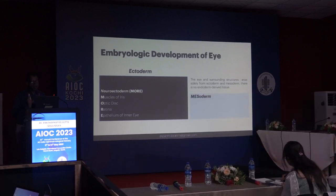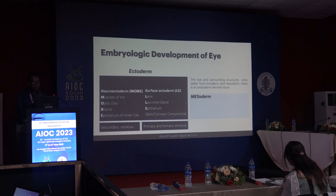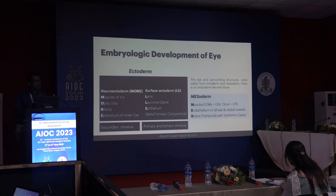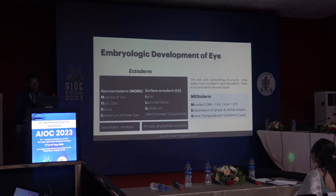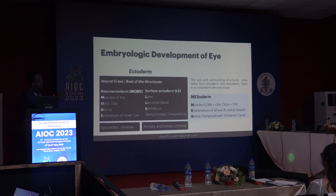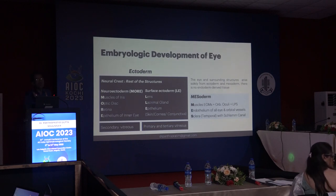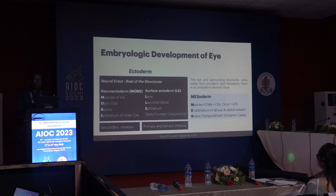The eye and surrounding structures arise solely from ectoderm and mesoderm — there is no endoderm-derived tissue in the eye. Mesoderm structures can be remembered with MES: M for muscles of the extraocular muscles, orbicularis oculi, and levator palpebrae superioris; E for endothelium of all ocular and orbital vessels; and S for sclera, mainly the temporal sclera with the scleral canal. The remaining structures are derived from neural crest. Secondary and tertiary vitreous are derived from ectoderm.